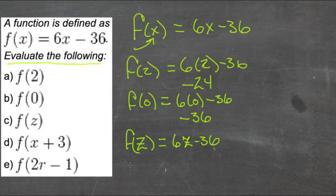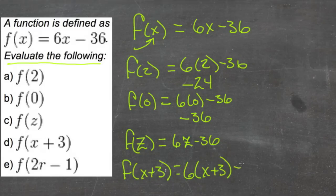f of x plus 3 would mean that we'd need to replace x up here with x plus 3, so we'd get 6 times x plus 3 minus 36. And if you wanted, you could distribute that 6, you'd get 6x plus 18 minus 36. And then 18 and negative 36 could be combined, and you'd get 6x minus...